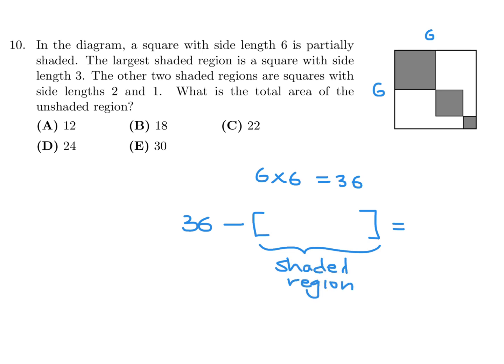Now that shaded region looks to me like 3 squares. The first square is a 3 by 3. The second square is a 2 by 2. And the last square is the 1 by 1. So that looks to me like 36 minus 9 plus 4 plus 1. So that's 36 minus 14, I believe. And that would be 22. So therefore, that would be C for number 10.